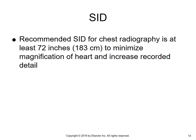SID for chest radiography is at least 72 inches. 72 inches is used to minimize the magnification of the heart and increase recorded detail. As you increase the OID, magnification occurs. For a lateral, we do a left lateral to get the heart closest to the IR. However, there's still going to be some magnification, so we take our SID and bring it back to 72 inches. Increasing the SID is going to decrease magnification.